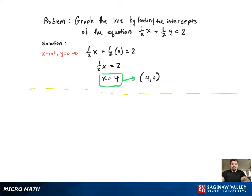You need two points to graph a line. Now we're going to find the y-intercept. Plug 0 in for x.